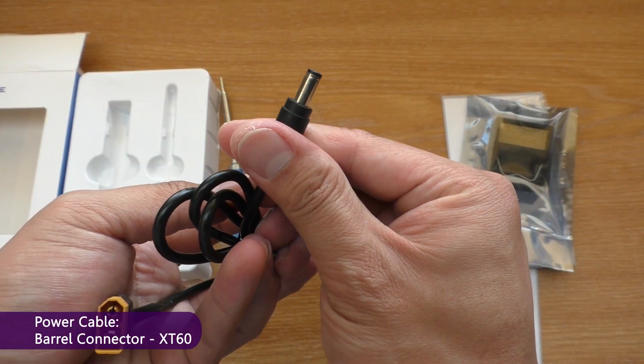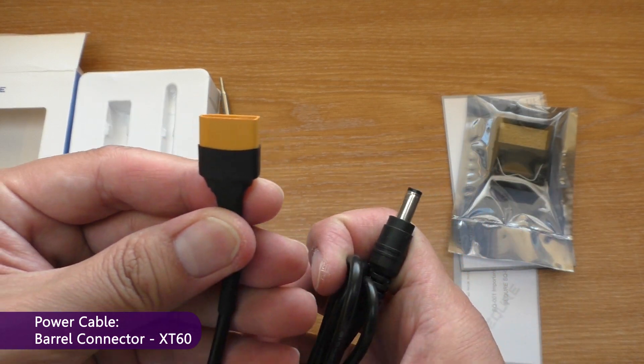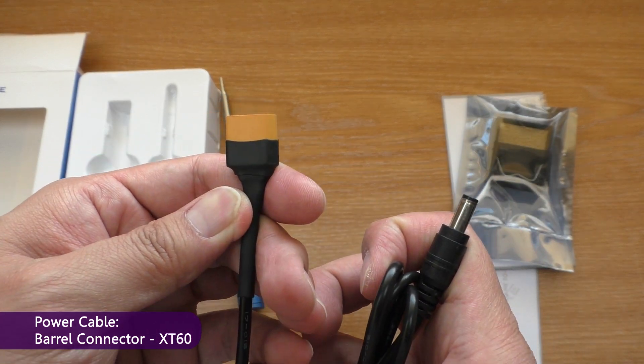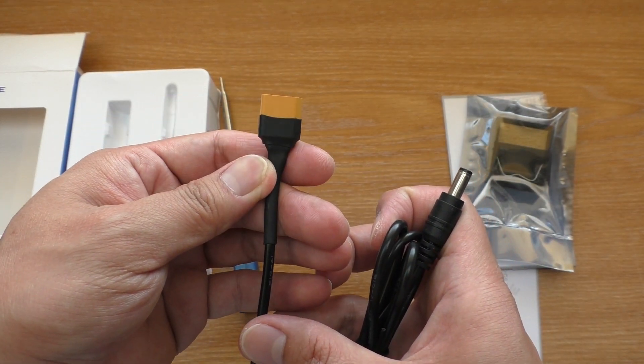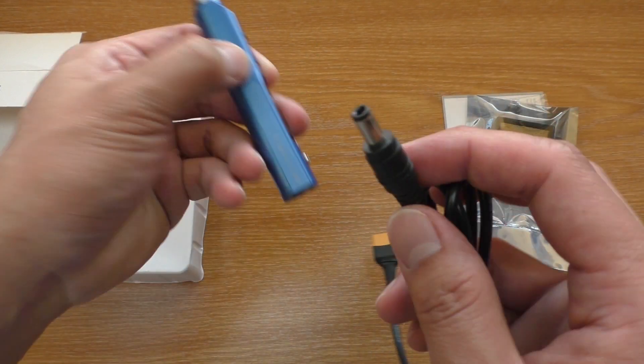Next we have the power cable with barrel connector for the iron and XT60 connector for the power source. This is a great addition to the package because the other TS-100 don't give you this cable and you'll have to buy it extra.